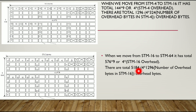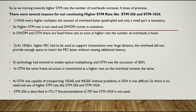There are total 5184, which is 4 into 1296, and 1296 is the number of overhead bytes in HTM 16. So as we move towards higher HTM rates, the number of overhead increases 4 times of the previous. This is the main reason why we don't use HTM 256 and HTM 1024. With every higher multiplex the amount of overhead bytes quadruples and only a small part is necessary, so higher HTM rate is not used and DWDM comes into existence.